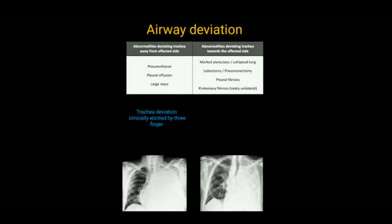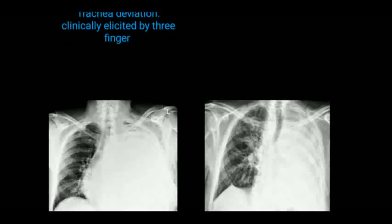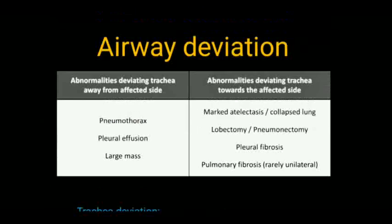This is tracheal deviation. Let's look through an X-ray — here the trachea in the left image is deviated towards the right side, the pathology being in the left lung. So the trachea is deviated away from the pathology. In the right X-ray, we see the trachea is deviated towards the pathology, which is on the left side. How does the trachea react to the pathology? Let's learn about it.